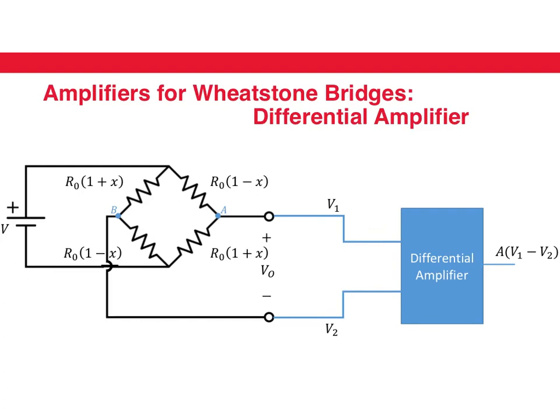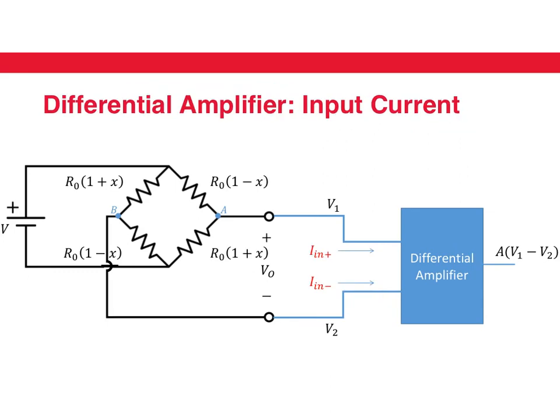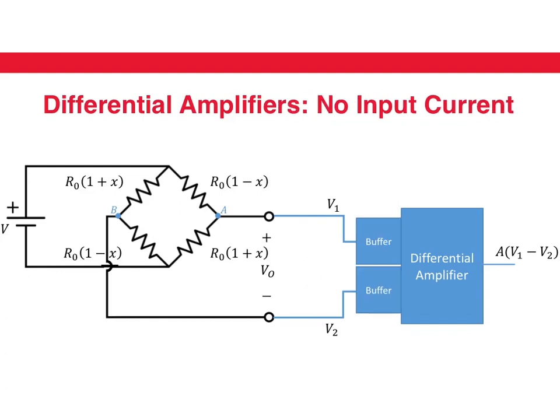In a differential amplifier, the currents that flow into the circuit are not zero, but we want them to be zero. To make them zero, we can add buffers to both inputs of the differential amplifier. A buffer has almost infinite input impedance, and therefore zero current flows into it.